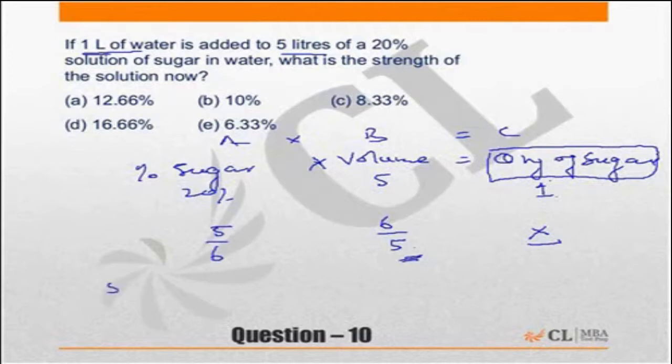The original percentage was 20%, so the new percentage should be 5 by 6 times 20, which equals 16.66%. To repeat, since the quantity of sugar does not change, the quantity is constant.